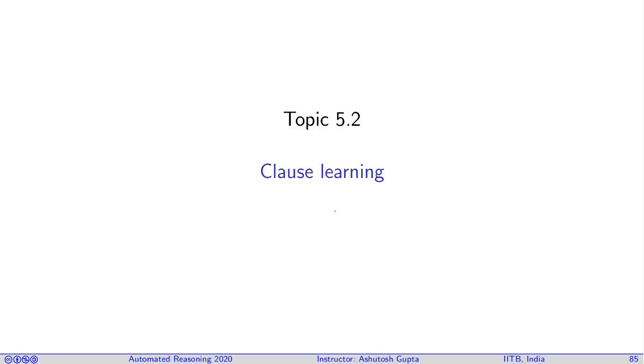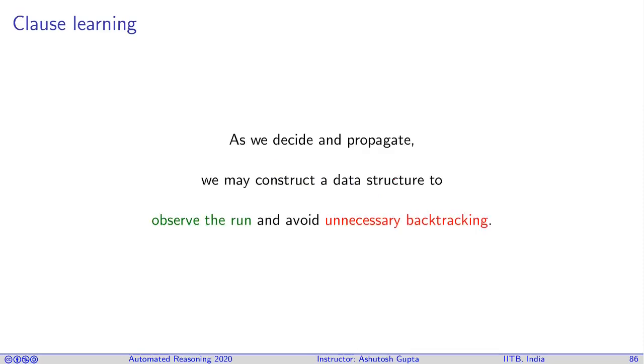Now let us look at an optimization on DPLL called clause learning. As we decide and propagate, we may construct a data structure to observe the run and avoid unnecessary backtracking.